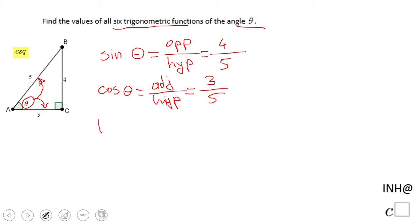Tangent is defined as opposite leg over adjacent leg. In this case, if you said 4 over 3, that is correct. These are probably the trigonometric functions used most of the time, but we have three more.